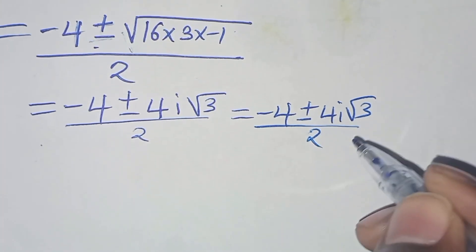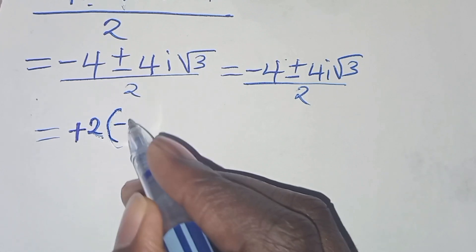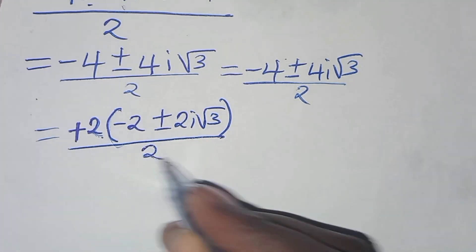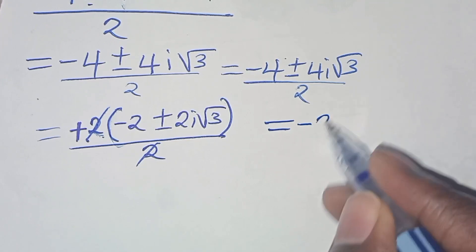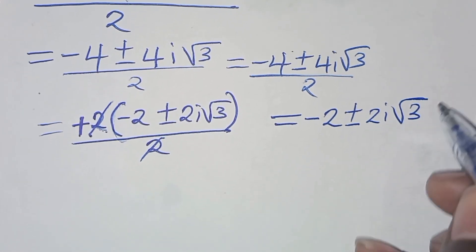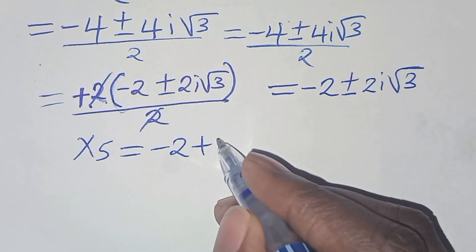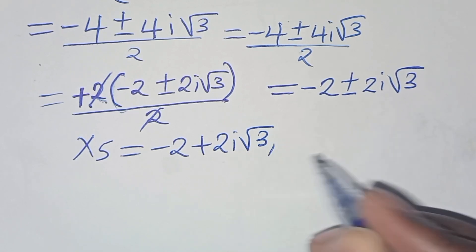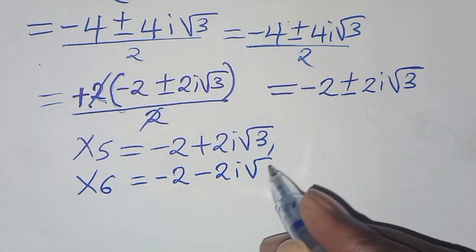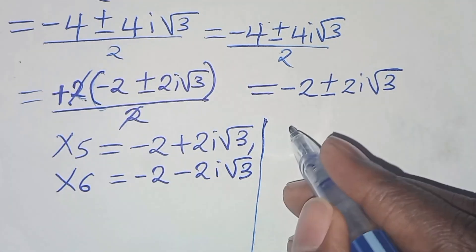Factoring out 2 from the numerator: (2(−2 ± 2i√3)) / 2 = −2 ± 2i√3. Therefore x₅ = −2 + 2i√3 and x₆ = −2 − 2i√3. This gives us six solutions in total.